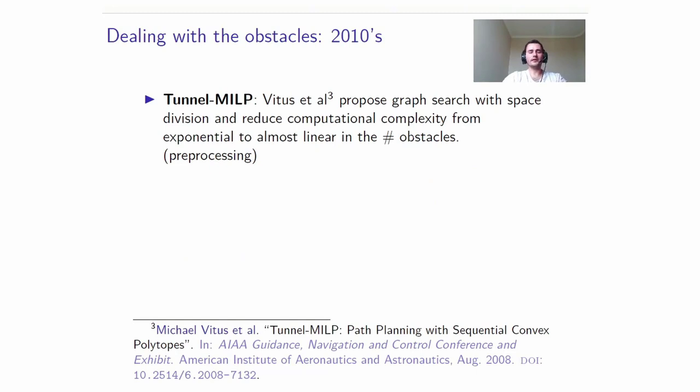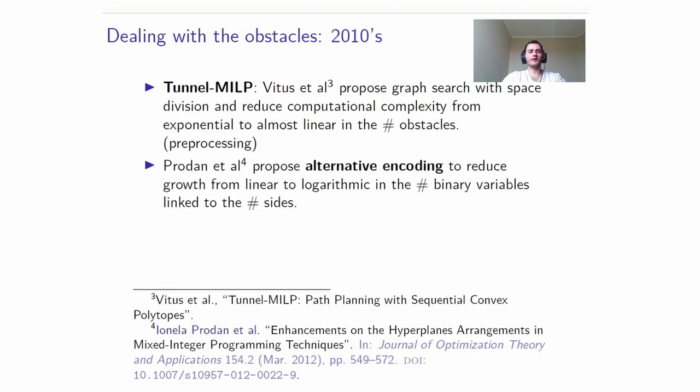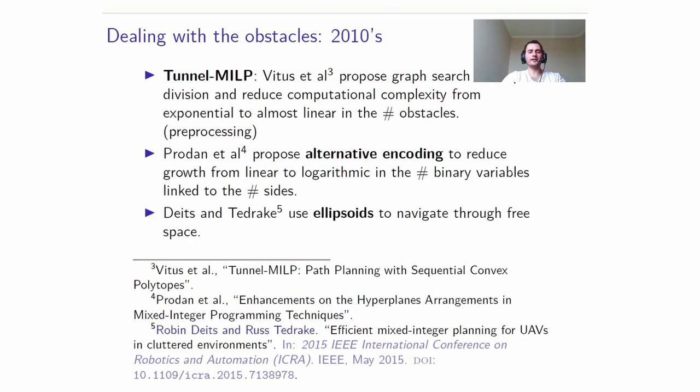In 2008, Tunnel MILP was proposed by Vitus and colleagues. They performed a graph search to find a tunnel of polytopes that contains a collision-free trajectory and then performed the MILP with OR constraints between the polytopes of the tunnel and not obstacle sites. Of course, this involved preprocessing. Prodan and others then performed an alternative encoding to reduce the number of binary variables associated with the number of obstacle sites, not directly with the number of obstacles. Deits and Tedrake then used ellipsoids to navigate through free space and also reduced the number of binary variables associated with obstacle avoidance.